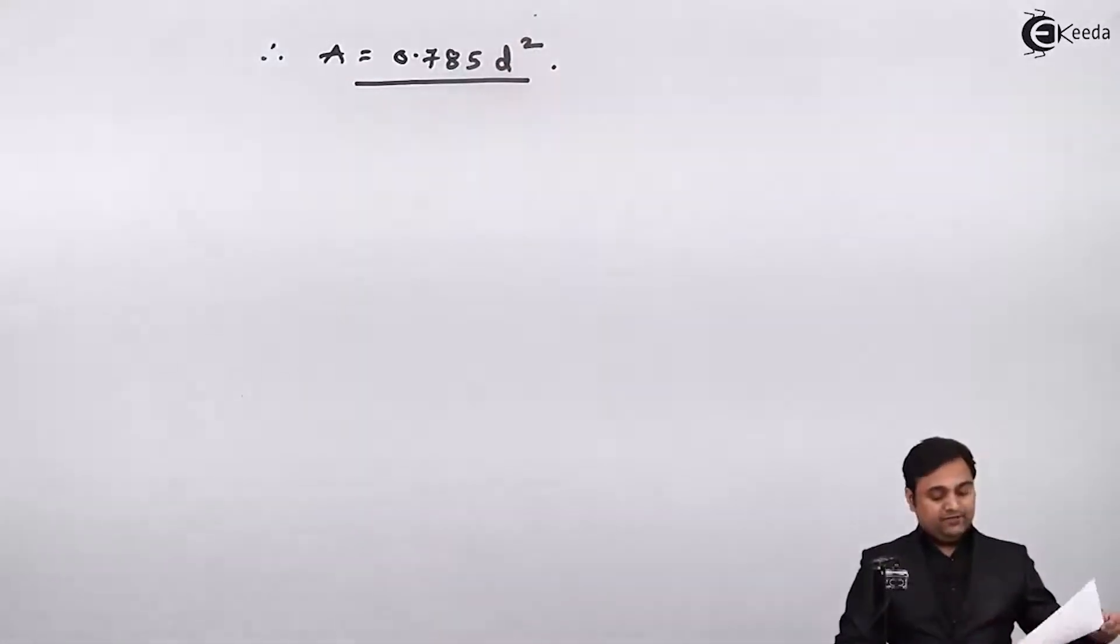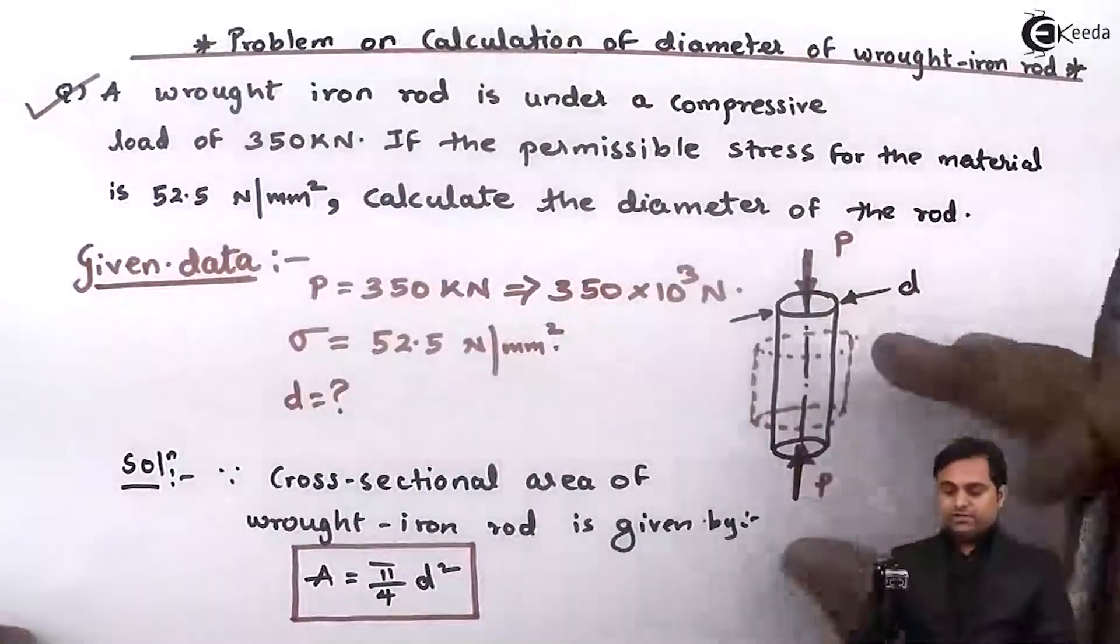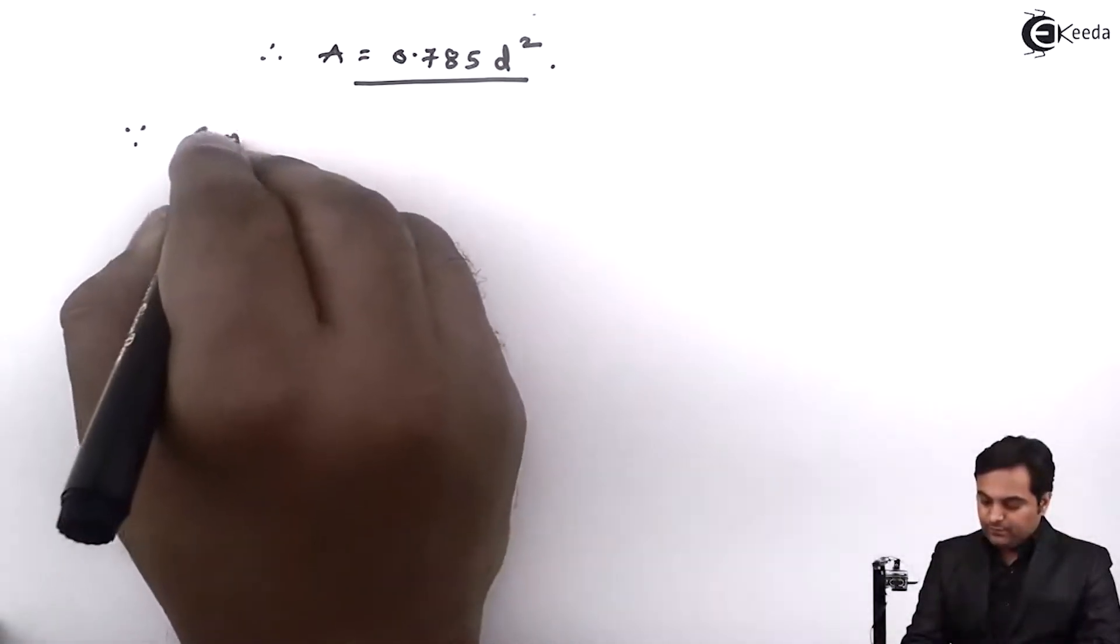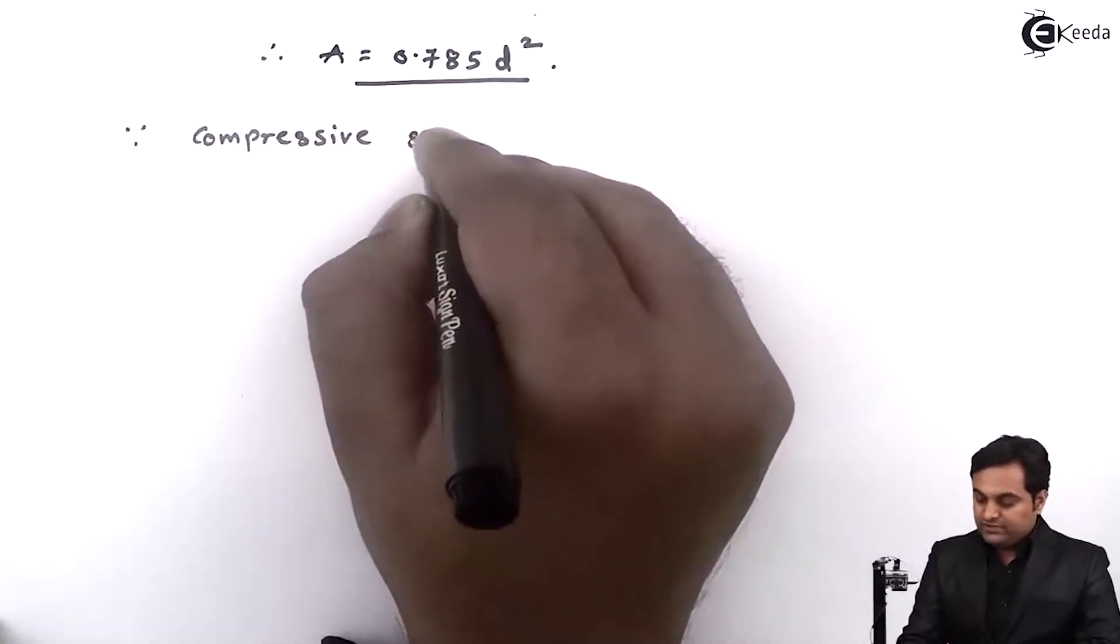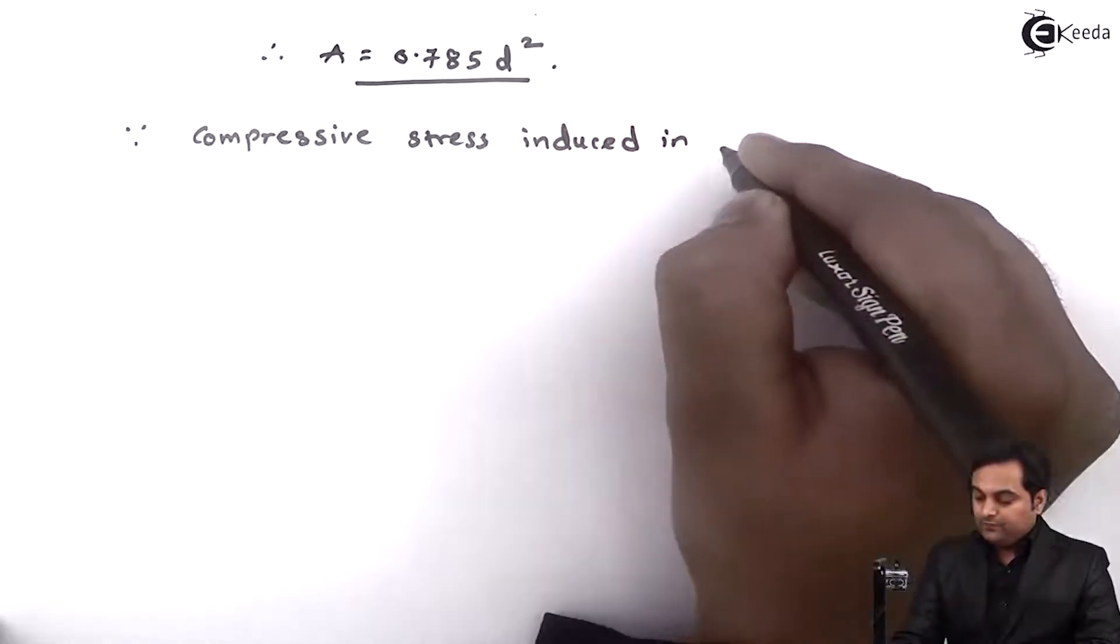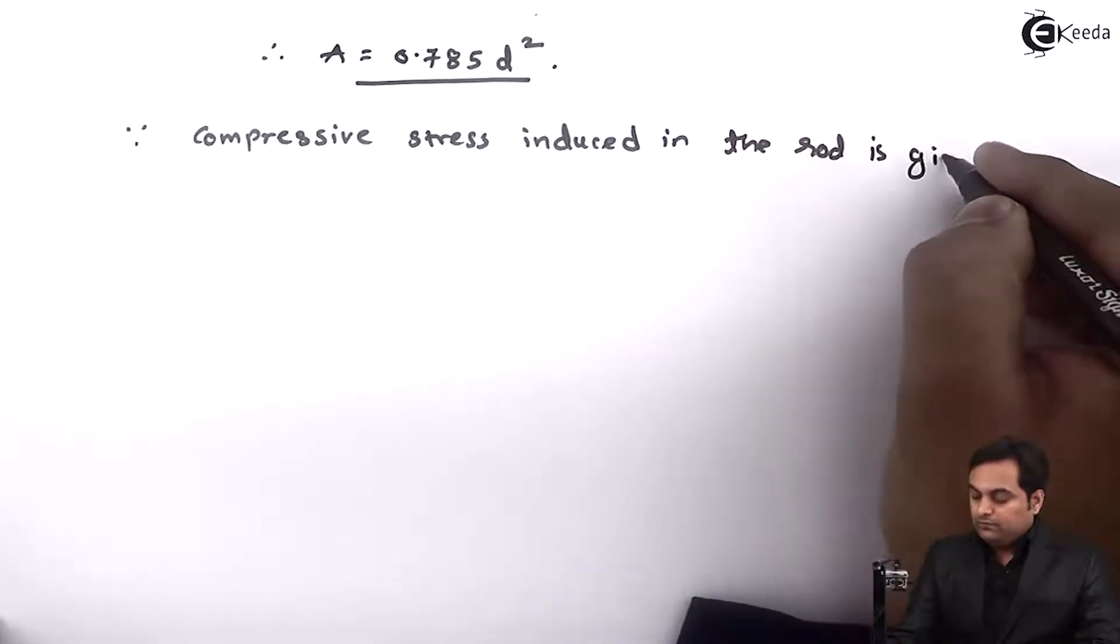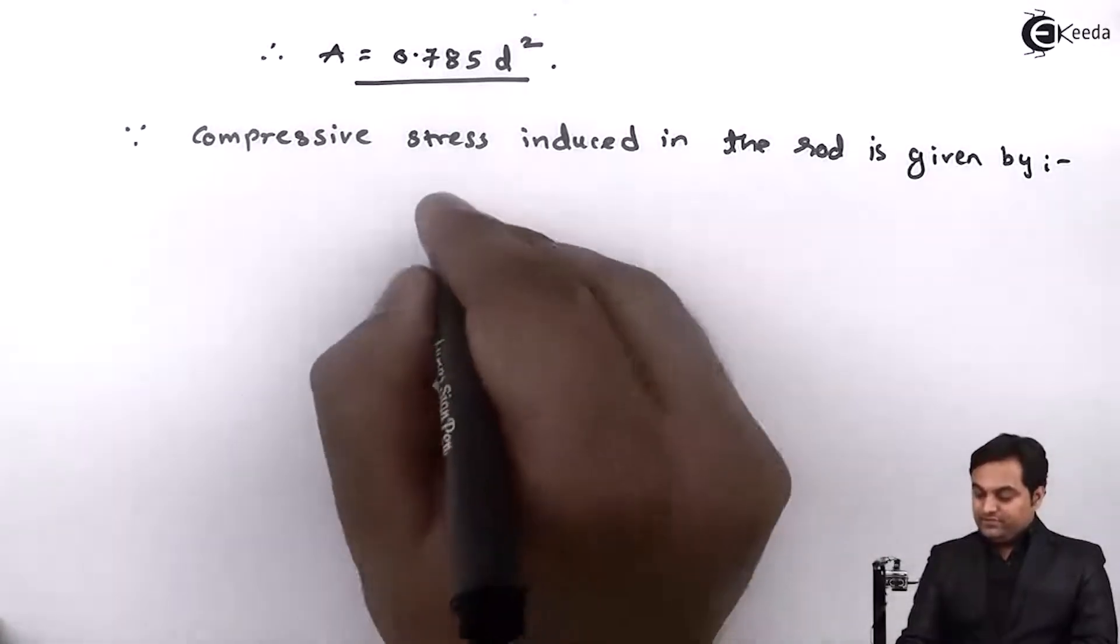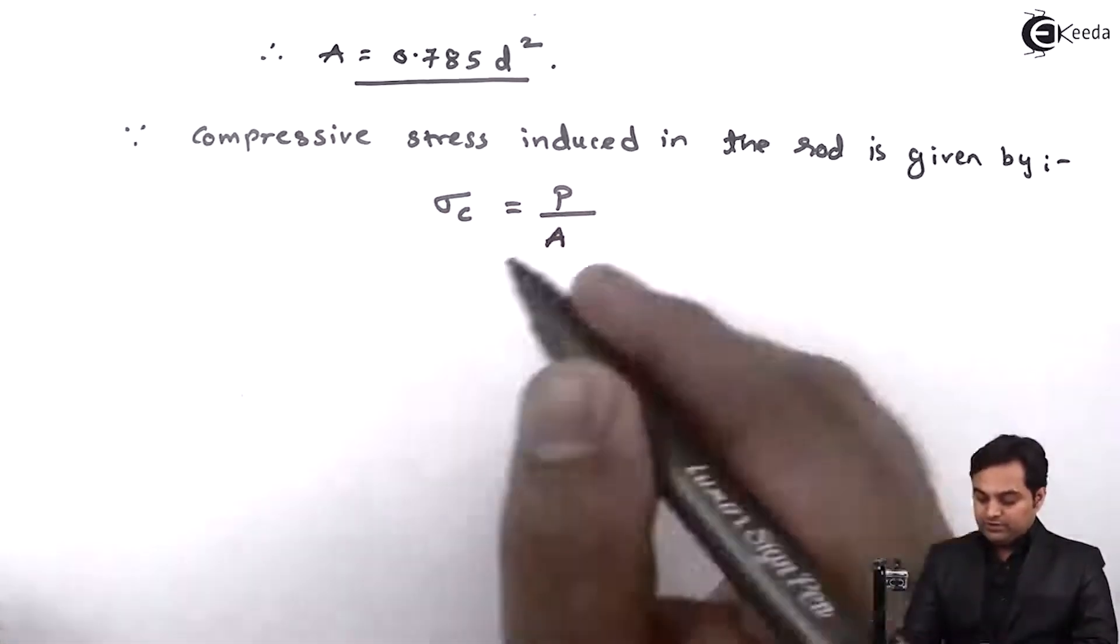Since compressive stress induced in the rod is given by sigma c equals load upon cross-sectional area.